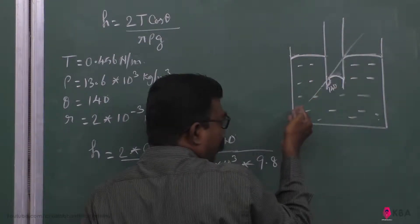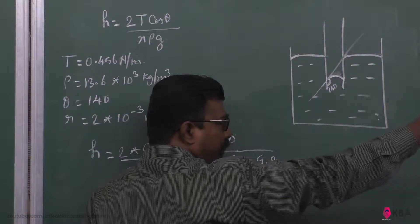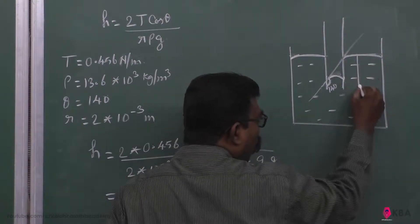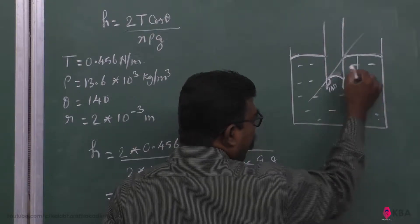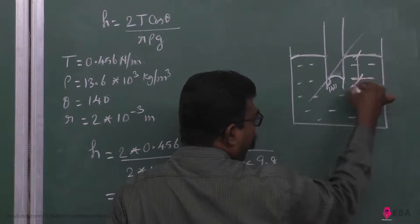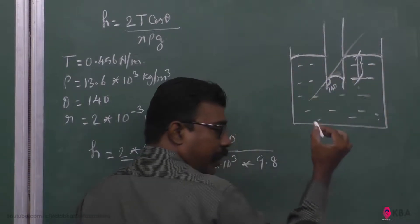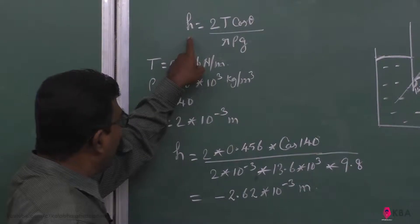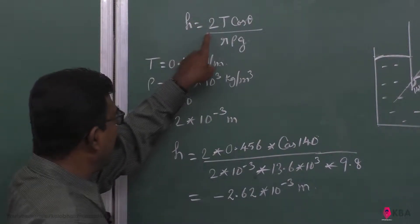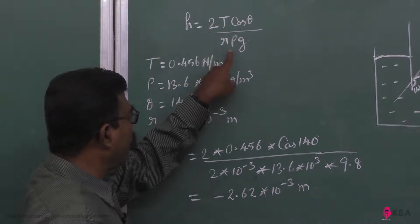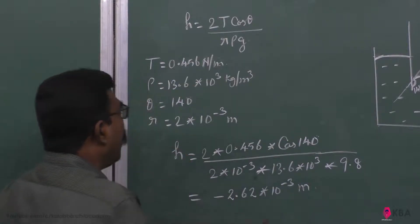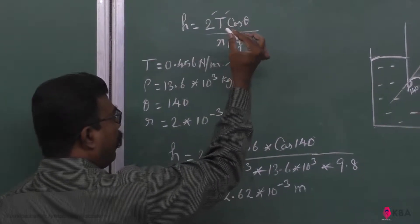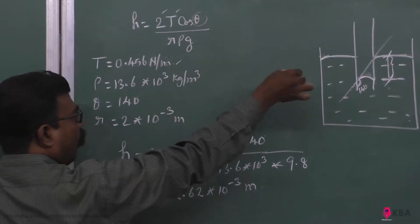From the meniscus tangent you can find the angle: 140 degrees. The formula for capillary rise or dip is: h = 2T cosθ / (r × ρ × g). We know that surface tension T = 0.456, and theta is 140 degrees.